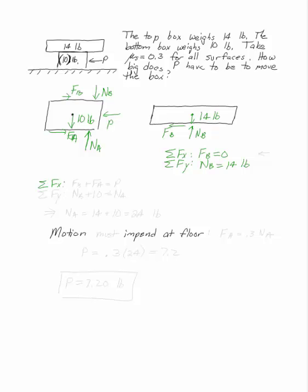So now I can go to my bottom box, FB plus FA equals P and NB plus 10 equals NA. NA is then just the sum of the two weights.